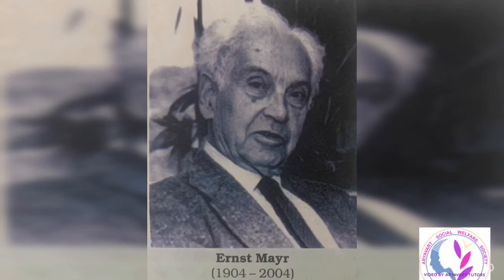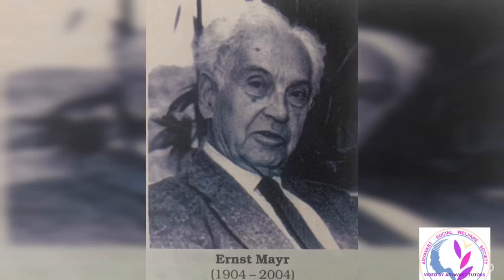The concept of species according to Mayr: if we see a plant, then morphological characters are primarily observed; and if we see an animal, then reproductive characters are most prominent. So the answer is D, morphology and reproduction.